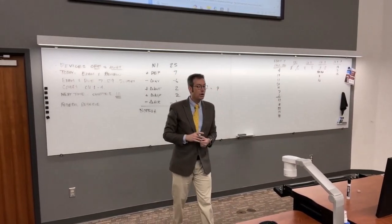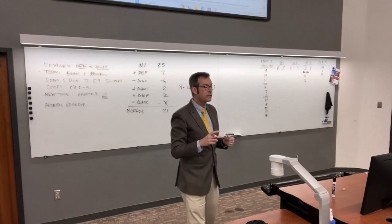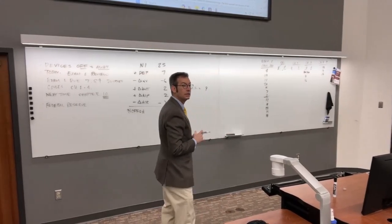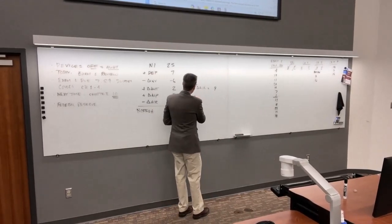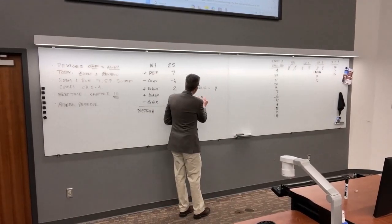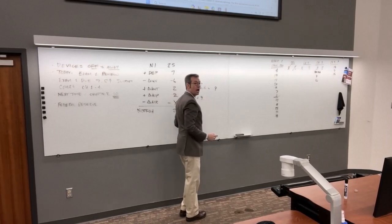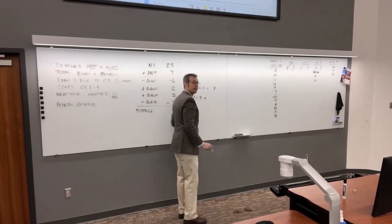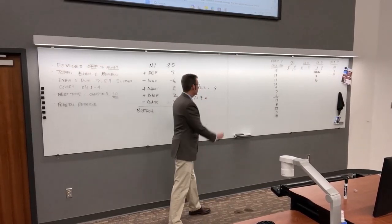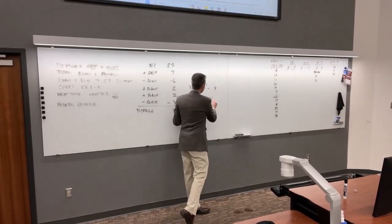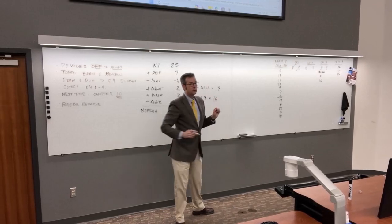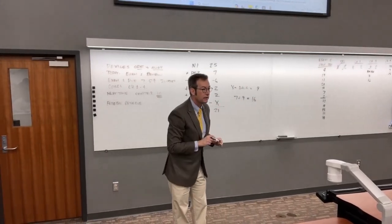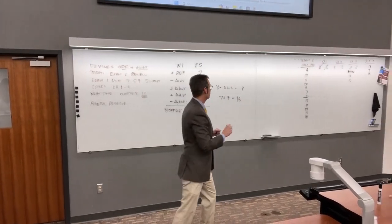How much was accounts receivable at the beginning of the year? Seven. Then we add the new change of nine. That gives us $16 million at the end of the year.